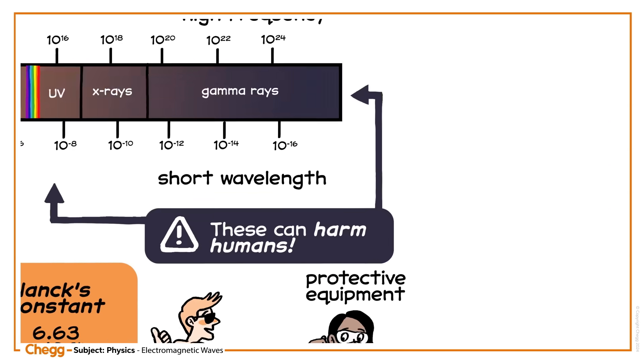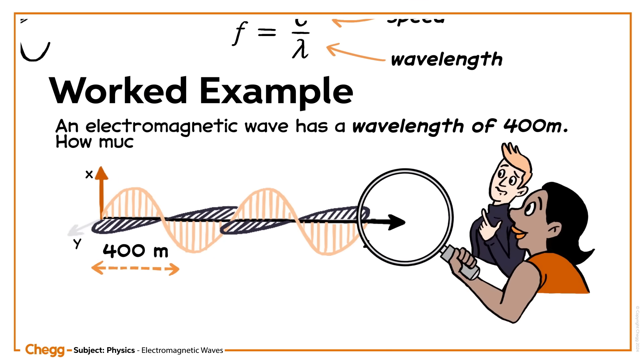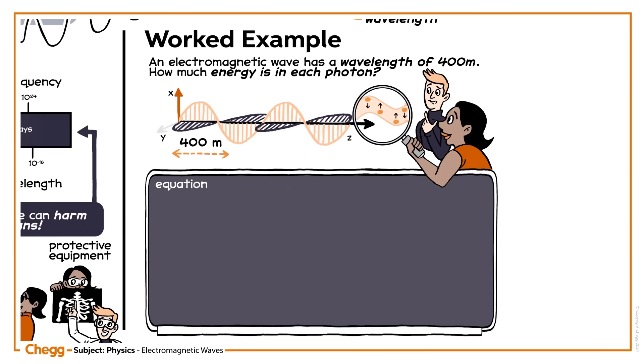Let's try using this equation. Say an electromagnetic wave has a wavelength of 400 meters. How much energy is in each photon? First, write the equation for the energy of an electromagnetic wave: E = hf. Since we know f = c/λ, substitute this in.